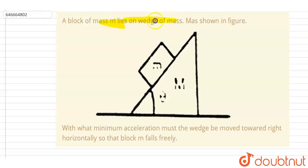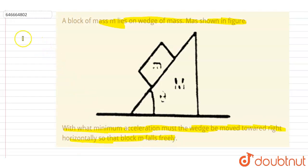Hello everyone. A block of mass small m lies on a wedge of mass capital M, as shown in the figure. With what minimum acceleration must the wedge move toward the right horizontally so that the block small m falls freely? So if we want small m to fall freely, the wedge should move toward the right so that it could fall freely in the downward direction.